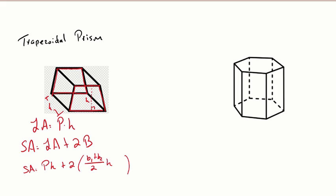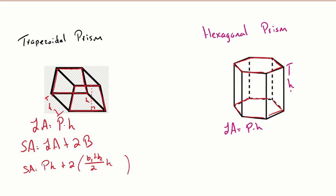Over here we have a different prism. We name it based on the shape of the base. The base has six sides, so it's a hexagon — making this a hexagonal prism. If you had a pentagon it would be a pentagonal prism, eight sides would be an octagonal prism, and so on. We calculate lateral area by perimeter times height of the prism.